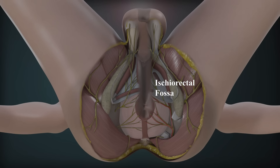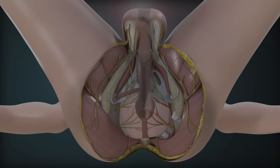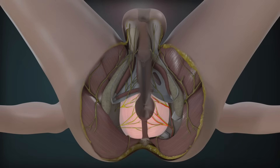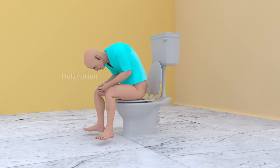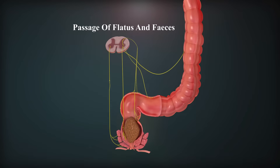The ischiorectal fossa is a wedge-shaped, fat-filled space situated on each side of the anal canal below the pelvic diaphragm. The two fossae communicate with each other behind the anal canal. They help in the dilation of the anal canal during defecation, i.e., passage of flatus and feces.